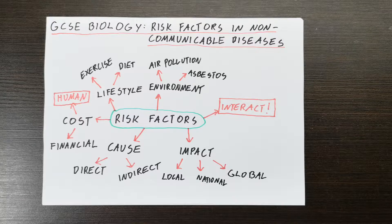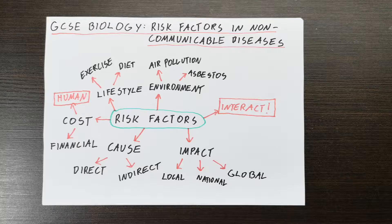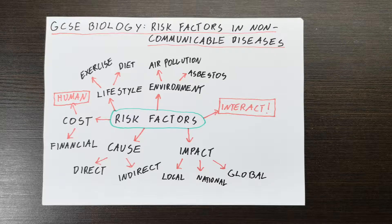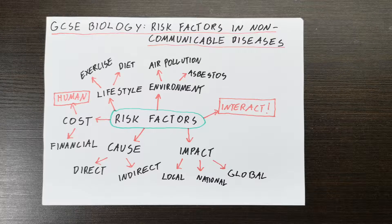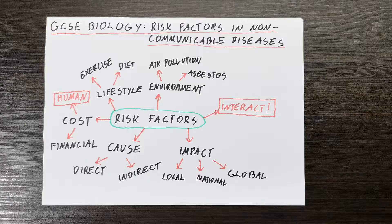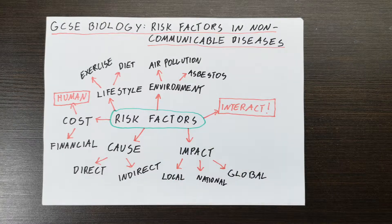For example, that person could be obese, and they could be smoking, and also drinking a lot — all three of these are risk factors for cancer. So it's very important to see how these risk factors interact together, and how it's usually not a single risk factor but a number of risk factors acting together on an individual. So what could be the impact of risk factors?